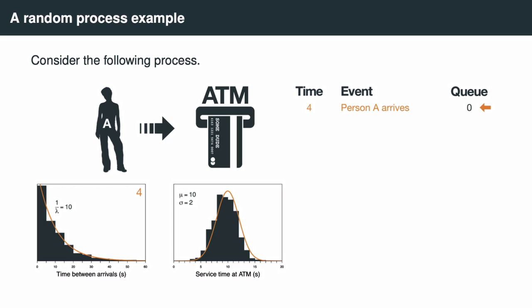This event gets added to the event list, and any event can trigger future or subsequent events. The first event triggers a draw from the exponential distribution — let's say the value 5 — and a new event is created: Person B arriving at time 9. This event is added to the chronological list. We also create an event where Person A enters the queue instantaneously, also at time 4. The simulation then moves to the next event in the list, which is Person A entering the queue.